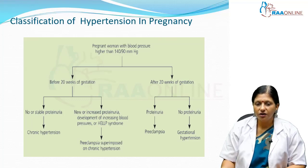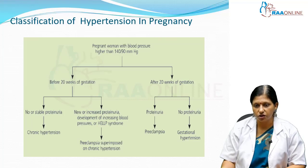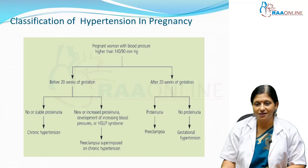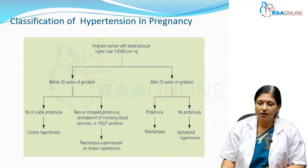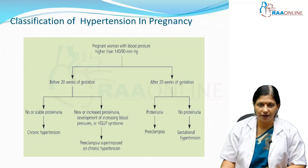Before 20 weeks of gestation, if there is proteinuria or elevated blood pressure, then it is pre-eclampsia superimposed on chronic hypertension. After 20 weeks of gestation, if there is proteinuria, it is called pre-eclampsia. And if there is no proteinuria after 20 weeks of gestation, it is called gestational hypertension.